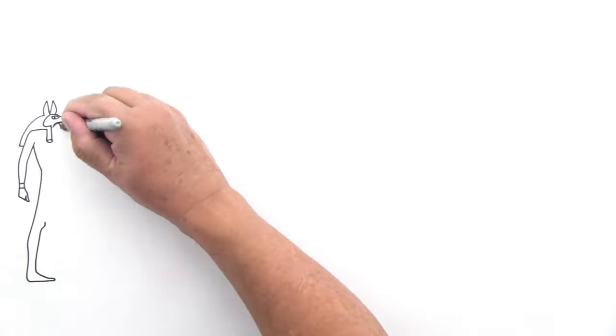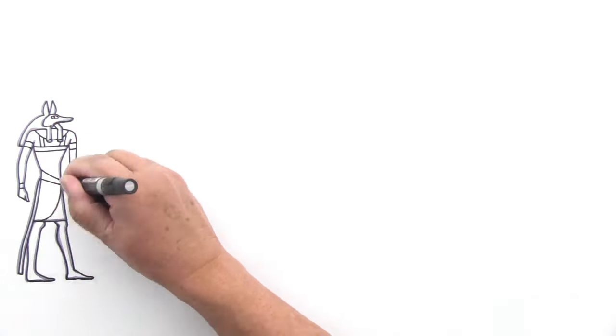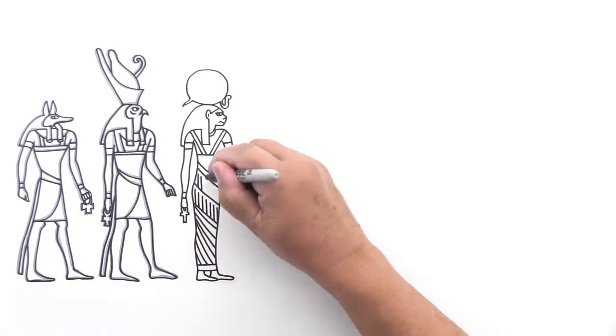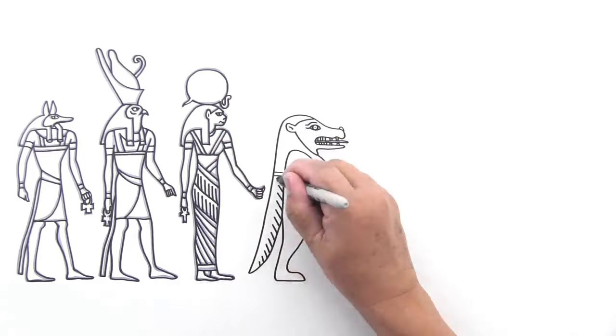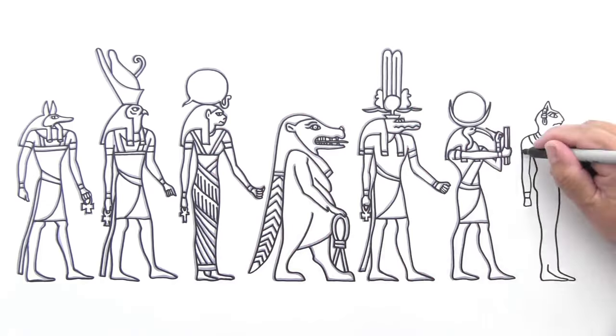That doesn't mean Egyptians weren't creative. Just look at their pantheon of gods. They imagined jackal-headed gods and hawk-headed gods, lion-headed goddesses, hippo-headed goddesses, crocodile-headed gods, and ibis-headed gods, cat-headed gods. And, well, you get the picture.